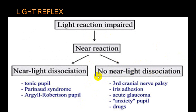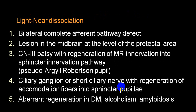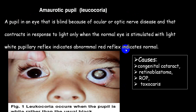Light-near dissociation: when there is dissociation of light reflex and near reflex, it is classical in Argyll Robertson pupil and Holmes-Adie pupil. If one reflex is preserved and one is absent, always look for these two conditions. Leukocoria — white central pupil — is very classical in congenital cataract and retinoblastoma. Wernicke's hemianopic pupil is caused by division of the optic tract, resulting in contralateral homonymous hemianopia.